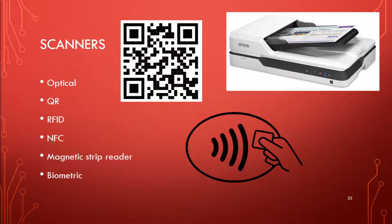QR codes store a lot more information than your standard barcode. Barcodes are traditionally just zeros and ones — like a UPC — and normally what's written right next to the barcode is what it's telling you. Barcodes are a lot easier to read, which is why a store scanner reads them nicely. The QR code can store much more information: your name, address, phone number — whatever you want. You could put a QR code on everything you own so if you lost something, someone could scan it and find out who it belongs to.